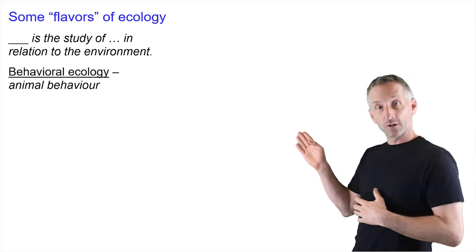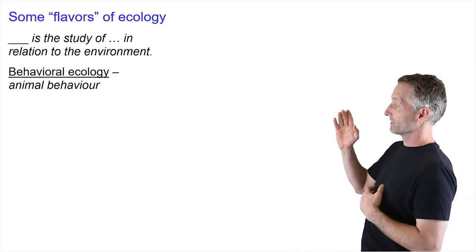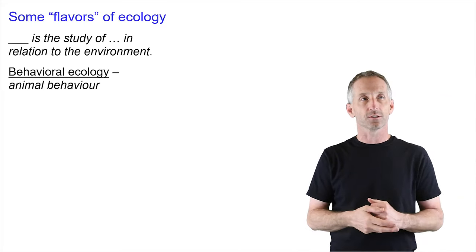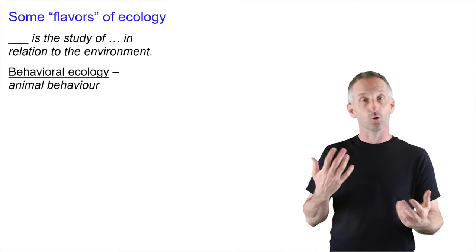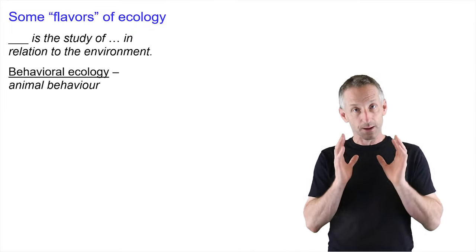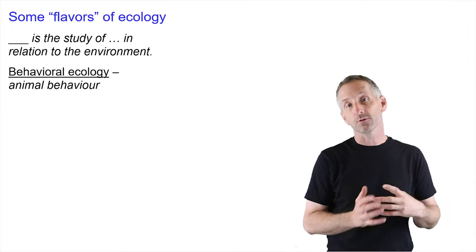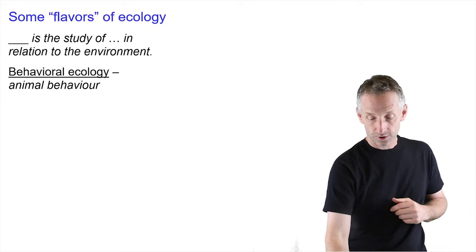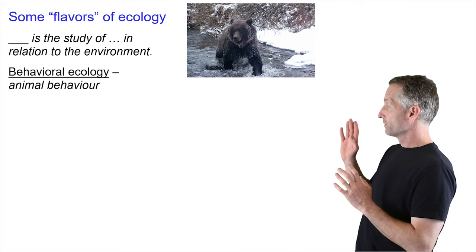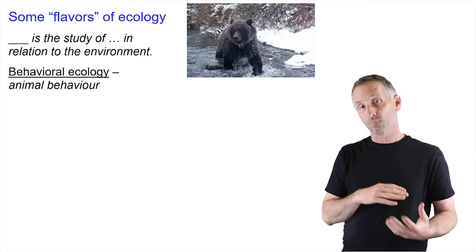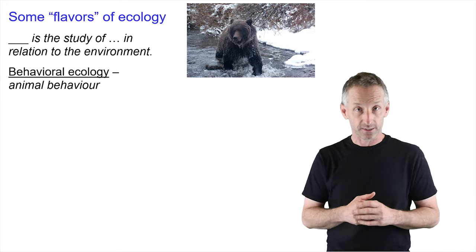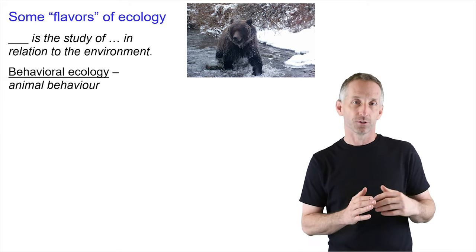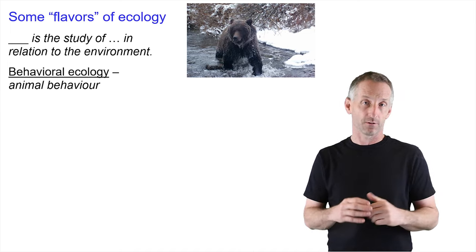One of those is behavioral ecology, which is the study of animal behavior in relation to the environment. It's not just the behavior of animals in a zoo or in a lab — it's them in the environment and why they do those behaviors. I'm going to talk about behavioral ecology by making reference to bears and how they forage and make choices about what they're going to eat, and in particular which salmon they're going to choose at a particular time and environment.